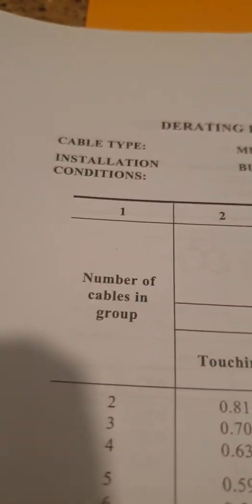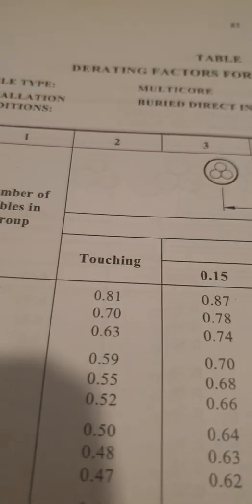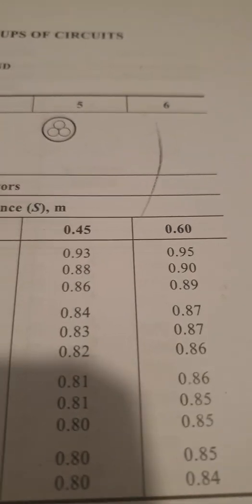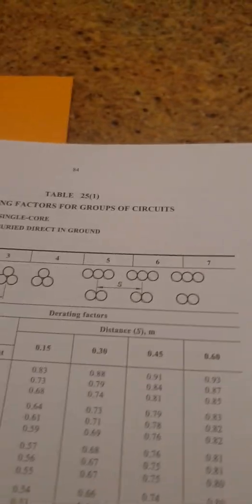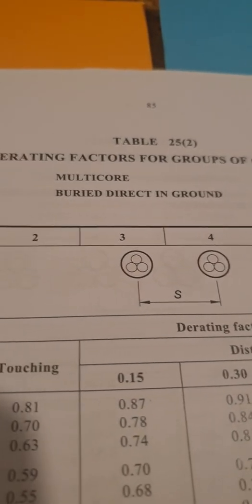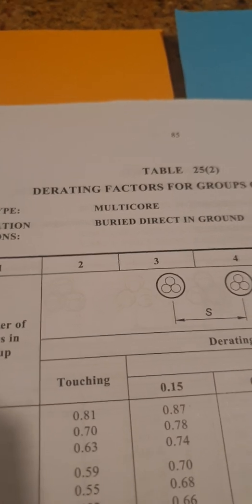Same thing over here - we have touching, two circuits touching, and then we have them moving apart. As I said, the further they move apart, the higher the percentage rate. So they're pretty straightforward. The only difference between 25.1 and 25.2 is this is for single core conductors like SDIs, and this is for your multi-cores like orange circular. The only difference between the two of them. I hope that helps you, and I'll talk soon.